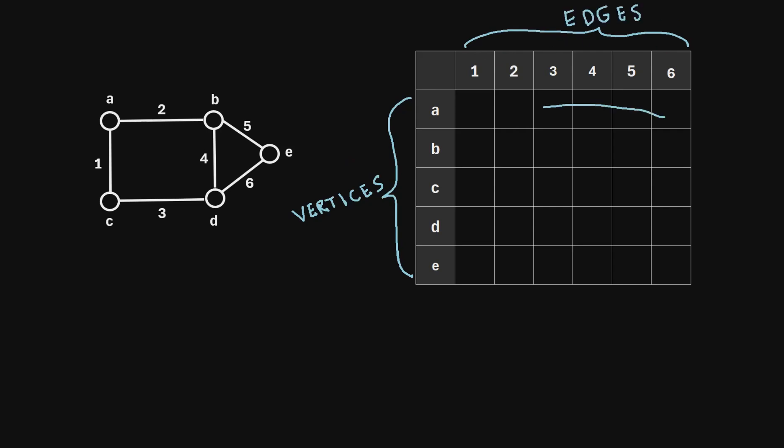Now what we're going to do is fill in the values of this matrix with zeros and ones to indicate which vertices and which edges are incident with each other, or in other words, are connected to each other.